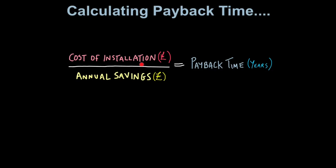In this equation, the cost of installation is measured in pounds. Annual savings is also measured in pounds. And payback time is measured in years. So let's look at a few examples.